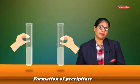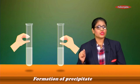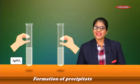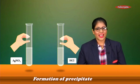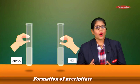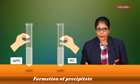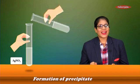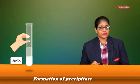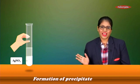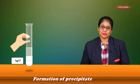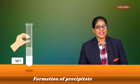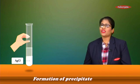Let's look at an example. In one test tube we have silver nitrate solution and in the other we have HCl, that is hydrochloric acid. Both substances are soluble — they are clear solutions. Now I am going to add the HCl into the silver nitrate. After some time, an insoluble substance is formed — this is the precipitate of silver chloride.